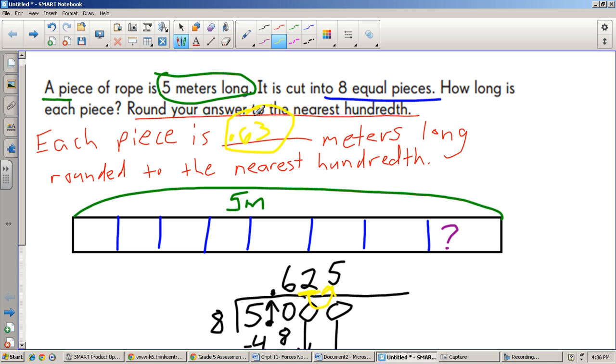That's my answer. Each piece of rope is 63 hundredths meters long, rounded to the nearest hundredth. So remember your steps. Read the whole problem. Very important. Write the sentence. Very important. Make a bar model to help you visualize. Very important. When you do your work, stop and make sure you're answering the entire question before you decide on the final answer. Good luck on your homework tonight and I'll see you tomorrow.